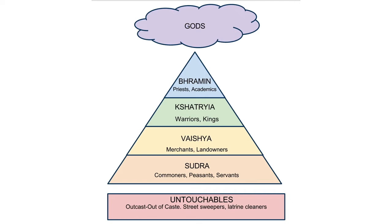Then you've got the Vaisyas, which is really the middle class — the traders, merchants, people who run shops and things like that. Below that you have the largest portion of the population, called the Sudras. They're the unskilled workers, farmers, peasants and things like that.